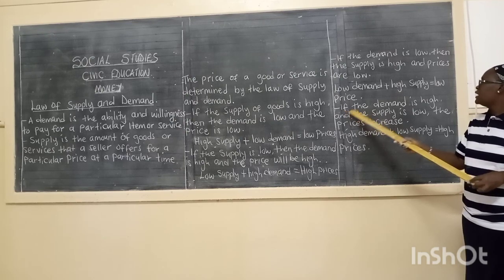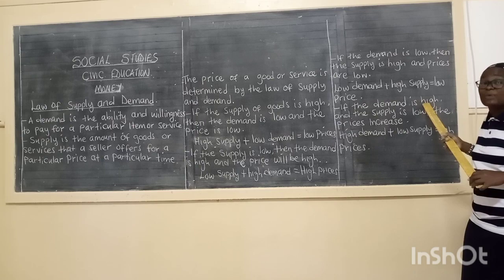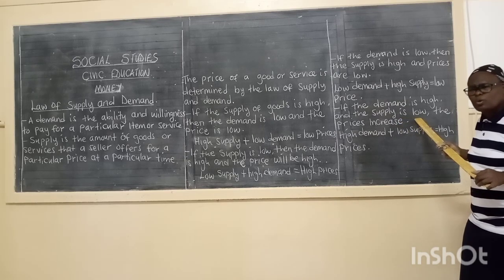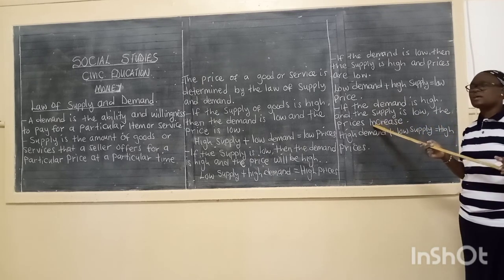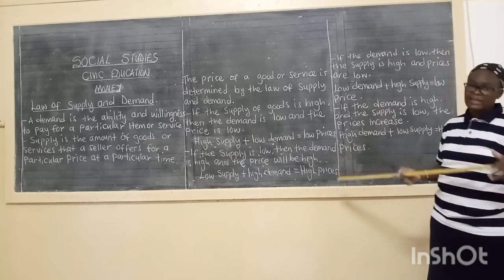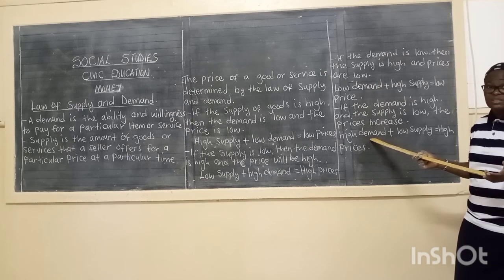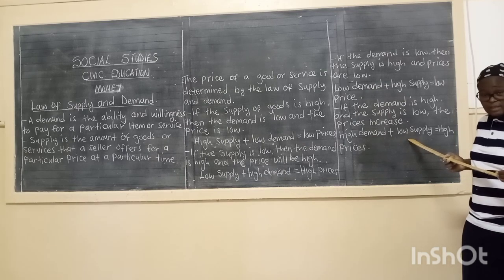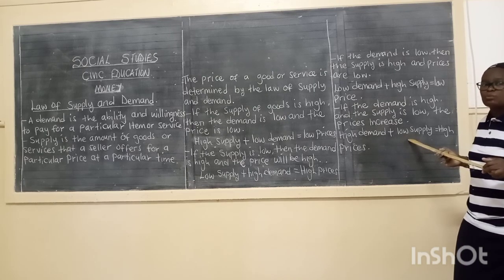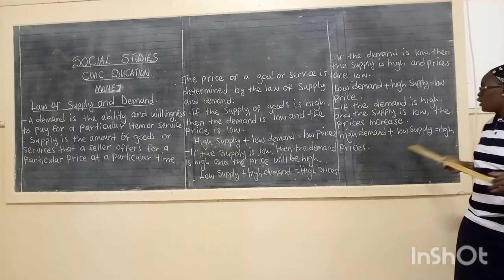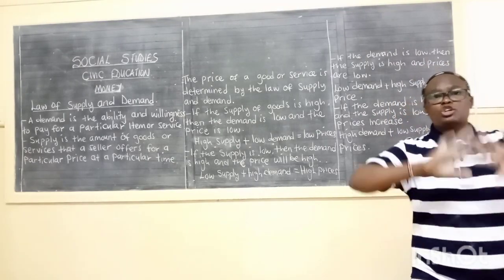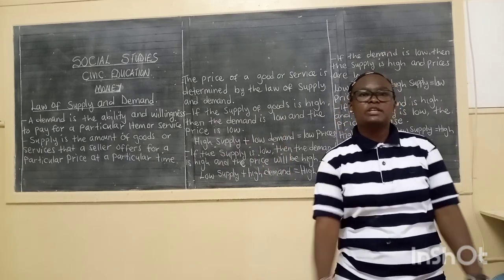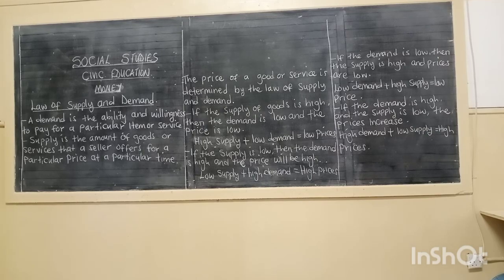Now let's look at the opposite. If the demand is high — many people really want raincoats now because it is rain season — and the supply is low, there are many people who want to buy raincoats but few people are selling them. What will happen to the prices? There will be an increase in prices. The equation: high demand, many people want this item, then low supply — if there is low supply of something very much needed at that particular time, there will be high prices. That's it for today. Don't forget to like, share and subscribe. Thank you.